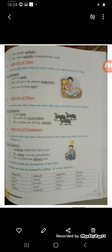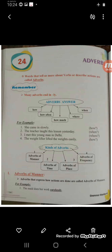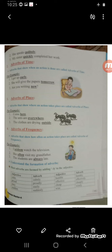Now let's move to adverb of time. Adverb of time denotes the time — it answers the question 'when.' I get up early — when do you get up? Early. So 'early' is an adverb of time. She will give the papers tomorrow — when will she give the papers? Tomorrow. Are you writing now? So 'now' is an adverb of time. Words like 'early,' 'tomorrow,' and 'now' tell us when the action is done — that is adverb of time.